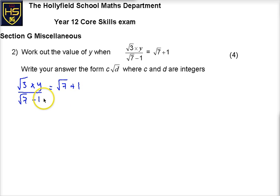We want to get y on its own, so why don't we just multiply by the denominator of this fraction. So we get root 3 times y, which is not really the best way to write that. I don't like the way they've written that in the question, so I would write it as y root 3, just my personal opinion. Root 7 plus 1, and I'll multiply by root 7 minus 1.